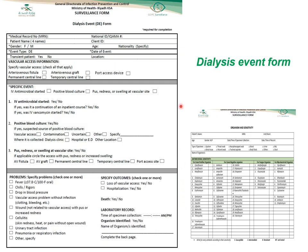The dialysis event form includes patient demographic information, whether the patient is a transient patient, vascular access information, and details about the event itself — marking which event type occurred (IV antimicrobial start, positive blood culture, or pus/redness/swelling). It also includes any complications associated with the event, the outcome, and if an organism is identified, the organism name and sensitivity data are recorded in the organism and sensitivity section of the form.